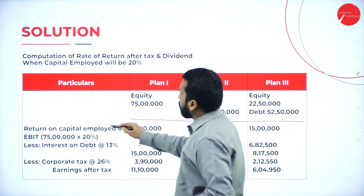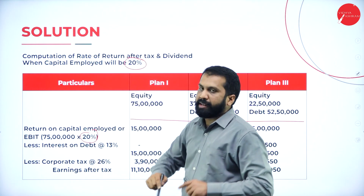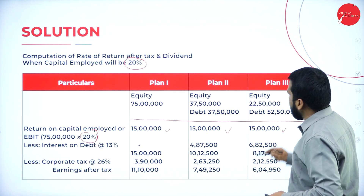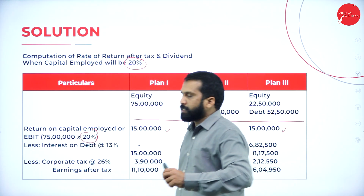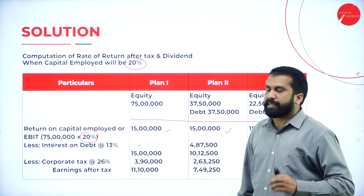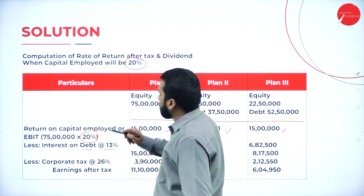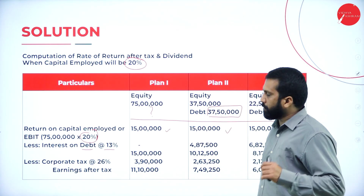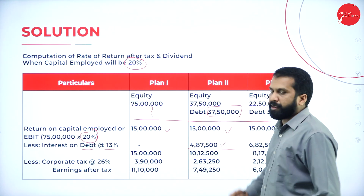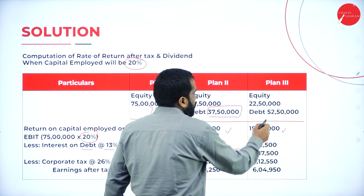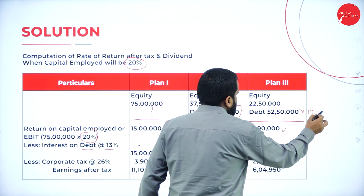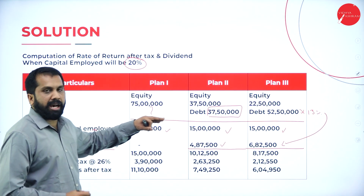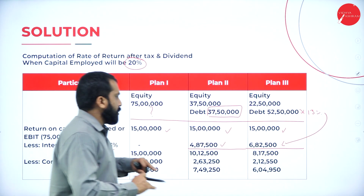Next, less interest on debenture at 13%. Option 1 has no debentures, so no deduction. Option 2: 37.50 lakh at 13% = 4,87,500. Option 3: 52.50 lakh at 13% = 6,82,500. Whatever debentures you have, on that you calculate the percentage.